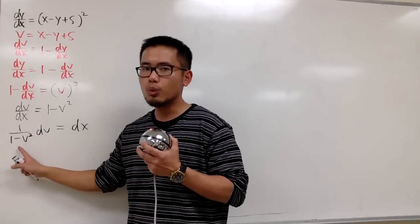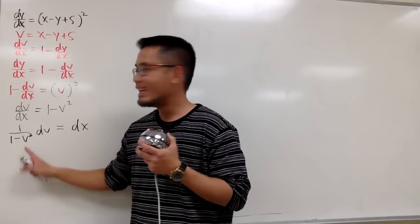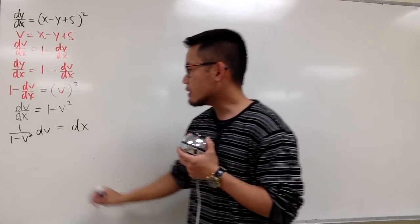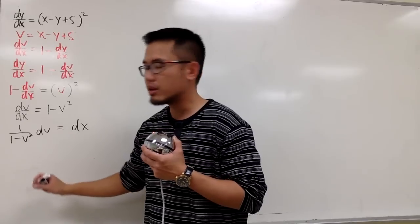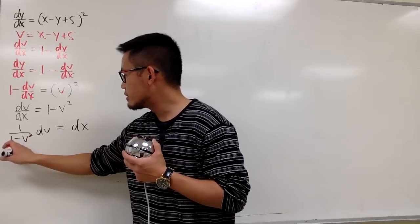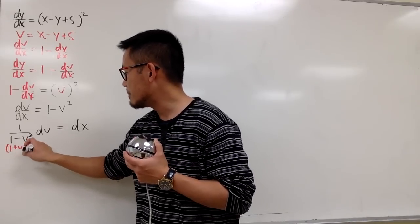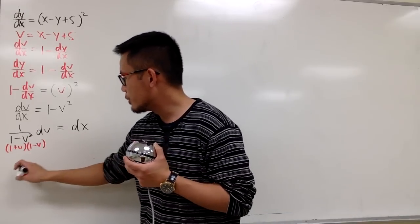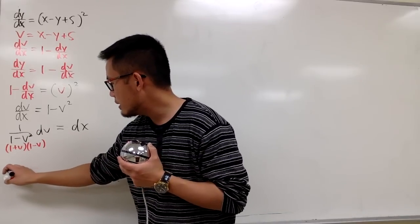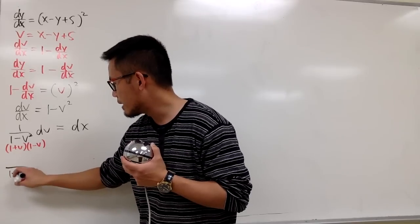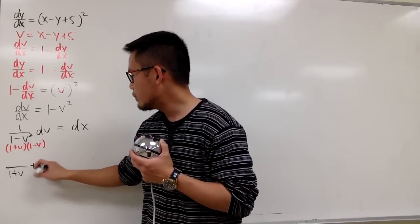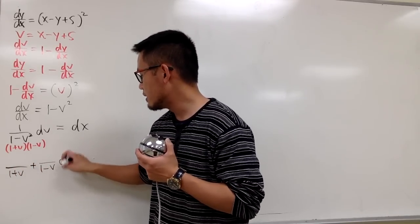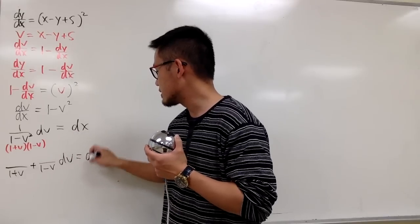To integrate 1 over (1 minus v squared), we are going to use partial fractions first. Let's factor the denominator — this is going to be (1 plus v)(1 minus v). So this becomes something over (1 plus v), plus something over (1 minus v), dv, and then we have the dx.